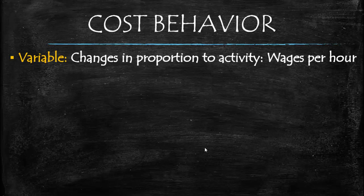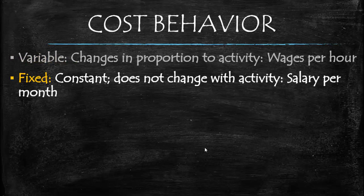Variable costs represent costs that change with activity. These are proportionate to the units that are produced or the activity that's incurred — a great example of this would be wages per hour. Fixed cost is the opposite in that it does not change with activity. A salary per month, for example, does not depend on the number of hours worked; the employee is compensated at a fixed rate.